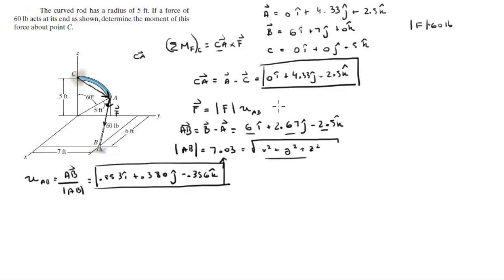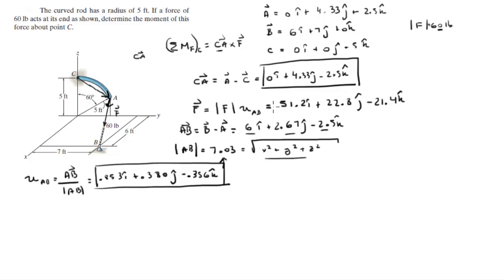Now that we have the unit vector, we multiply by the magnitude of 60 pounds. Multiplying the unit vector by 60 pounds gives the force vector F equal to 51.2i plus 22.8j minus 21.4k.